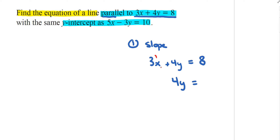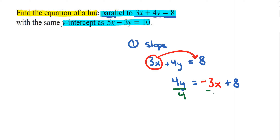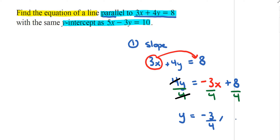If I take 3x and move it to the other side I get negative 3x, plus 8, and then I can divide both sides by 4. The 4s cancel off and I get y equals negative 3 over 4x plus 2.